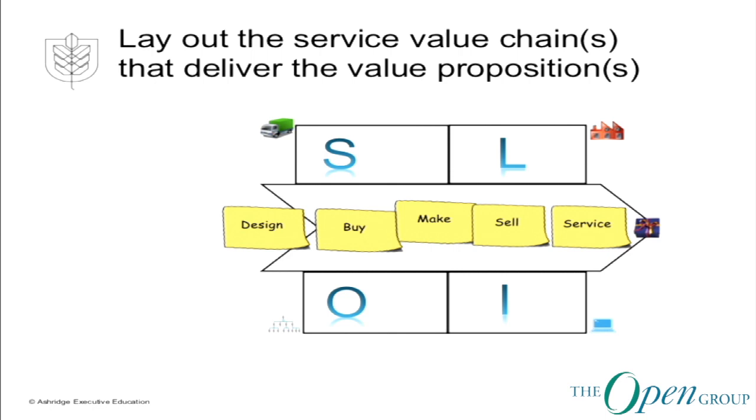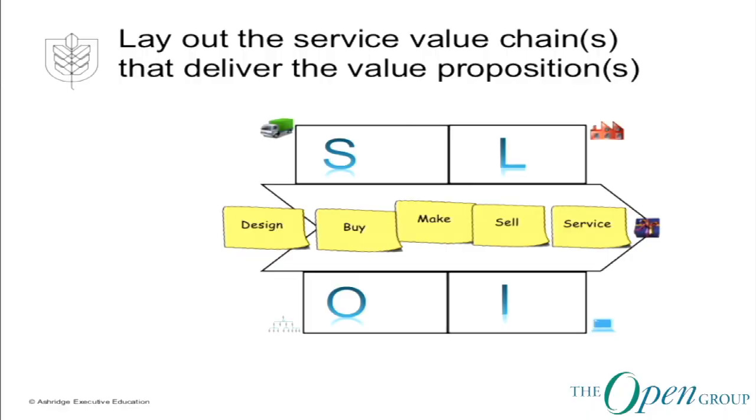In a simple manufacturing-type example, you're going to have to design some stuff, purchase some stuff, do some manufacturing or transformation, and then sell and service it — hoping for a happy customer at the end. If it's a customer outside the organisation, you'll know they're happy because they're paying you good money. If it's an internal organisation, it's always slightly harder to know whether you're really delivering what they want, because you don't necessarily have the monetary measure. You then add to the canvas — literally post-it notes on a flip chart — and debate the different steps, keeping it at a high level, no more than five, six, or seven.